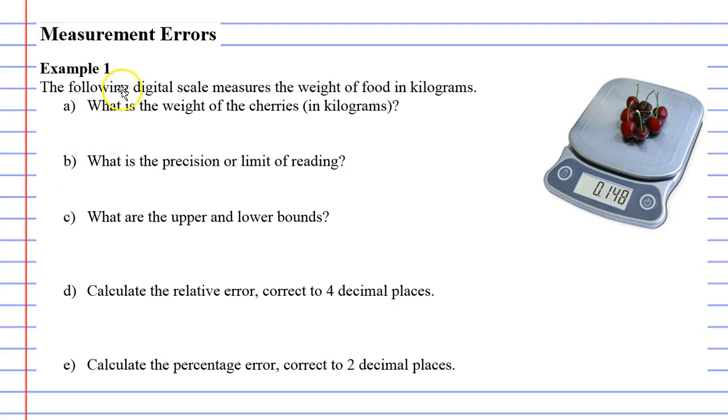Now for this example, the following digital scale measures the weight of food in kilograms. So here we have some cherries and they have been weighed at 0.148 kilograms. Question A is quite easy to answer because it's just saying what is the weight of the cherries in kilograms? 0.148. So this is a good start, something nice and simple.